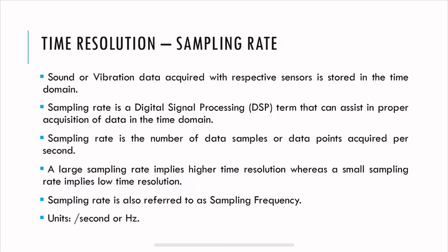A large sampling rate implies very high time resolution, whereas a small sampling rate implies low time resolution. Sampling rate is directly related to time resolution — it's how many points you have per second. If you have a very high sampling rate, the density in time is more, so the time resolution is higher, and vice versa.